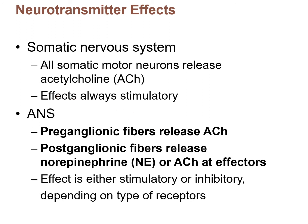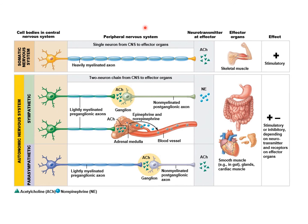Let's look at a picture to organize what we just went through. This is a nice summary of our motor division of the peripheral nervous system. Here's the somatic nervous system — the motor portion: the cell body of the neuron is in the central nervous system in the spinal cord, it leaves the spinal cord and works its way to a skeletal muscle, and at the neuromuscular junction acetylcholine is released, which is stimulatory and makes the muscle contract. As you can see, it's just one neuron in the peripheral nervous system for the somatic division.